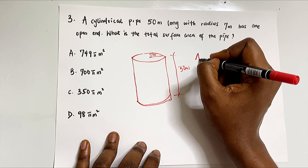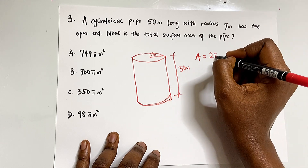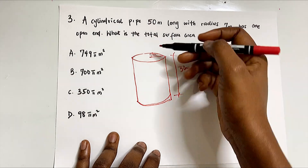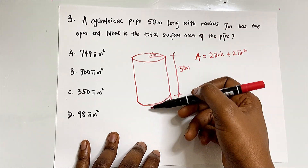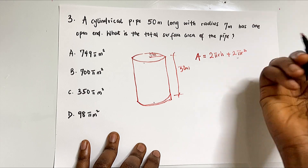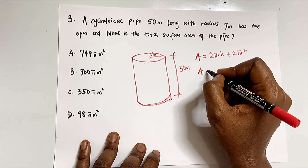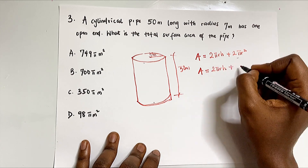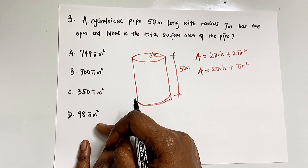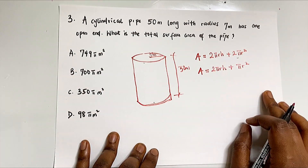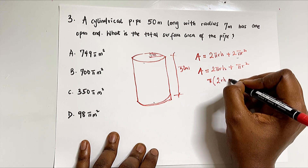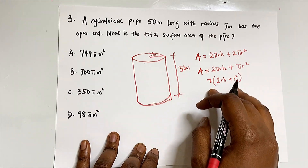Normally the total surface area of a cylinder is 2πrh + 2πr², where 2πr² accounts for two circular ends. But since one end is open, we only include one circle, so the formula becomes: Area = 2πrh + πr². Factoring out π gives: Area = π(2rh + r²).